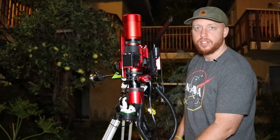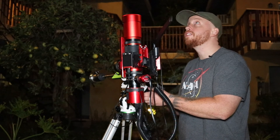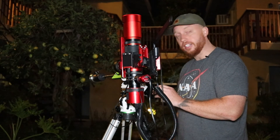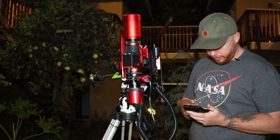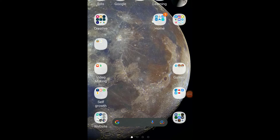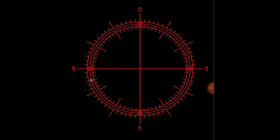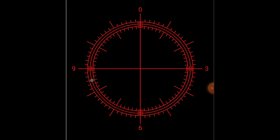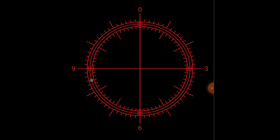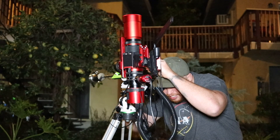First things first, we need to polar align. I'm going to get the North Star right on the clock of the polar scope. Pull up the Sky Adventure app, go into the polar clock, and whatever your time, date, and location are set to, you'll have a little dot where Polaris should be. Adjust the controls until you get Polaris there. This is how it will look through your polar scope — you want the zero faced upward.